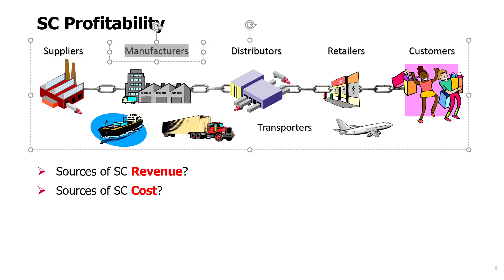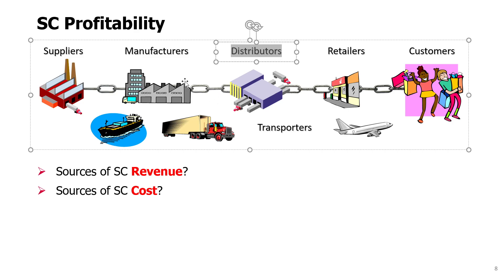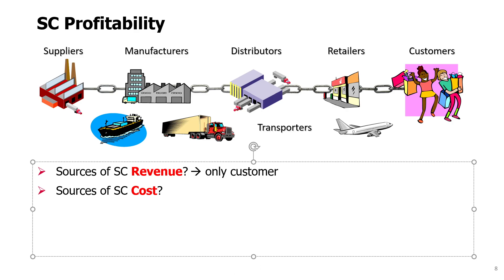If you consider one stage in the supply chain, for example a manufacturer, then this manufacturer will have certain costs — internal costs. Maybe they will purchase something from suppliers, which will also be part of their cost, and their revenue will be what the distributors pay for the products the manufacturer delivers to them. However, this revenue of the manufacturer is not really a revenue of the supply chain. The only source of revenue for the supply chain are the customers.